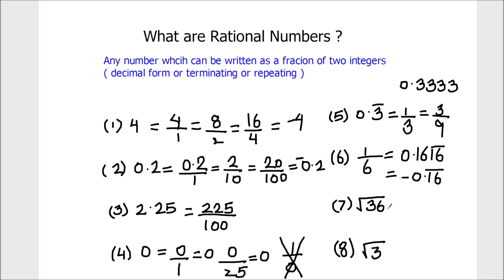Now let's look at the 7th example: the square root of 36. The square root of 36 is 6, which can be written as the fraction 6 over 1, or 60 over 10. So this is a rational number.